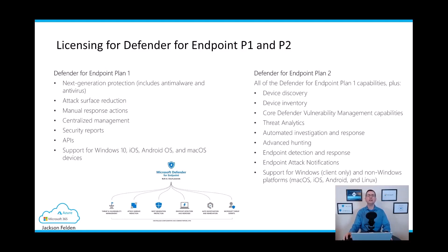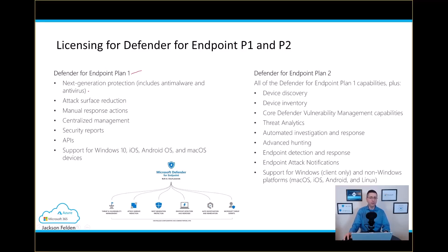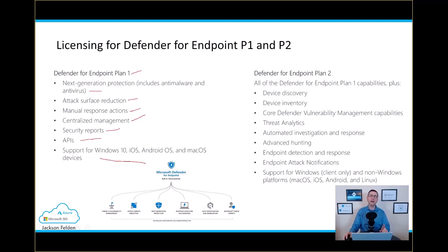When it comes to licensing, there are three flavors you can choose from: Defender for Endpoint P1, P2, or Defender for Business. Starting with Defender for Endpoint P1, the key coverage includes next-generation protection, attack surface reduction, manual response actions — unfortunately not auto investigation — centralized management via security.microsoft.com, security reports, APIs, and support for Windows 10, iOS, and so on. Please remember, Defender for Endpoint P1 is part of Microsoft 365 E3.